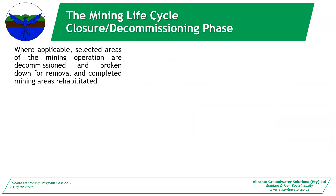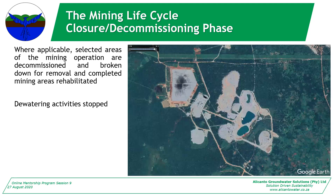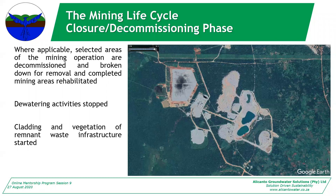In the closure or decommissioning phase, selected areas are decommissioned and broken down, completed mining areas are rehabilitated, and you stop dewatering in deactivated areas. Pits start flooding, the tailings dam wet beach starts shrinking, and crushers, grizzlies and conveyors are broken down. You start cladding and vegetation of waste infrastructure — putting geotextiles on the side of tailings dams and capping them off — so that when you get to post closure it's not as difficult.